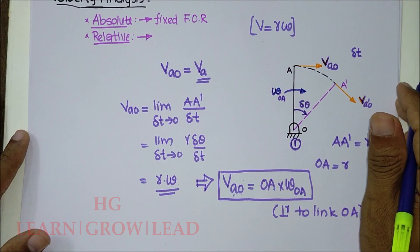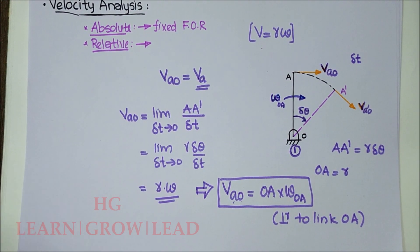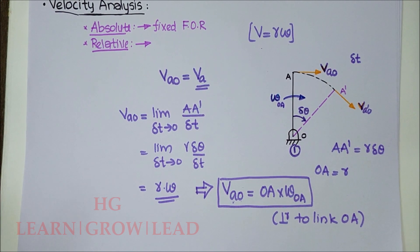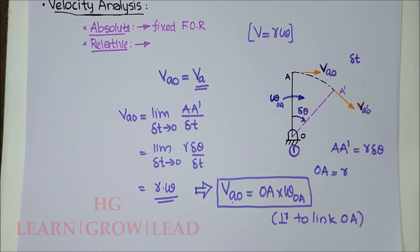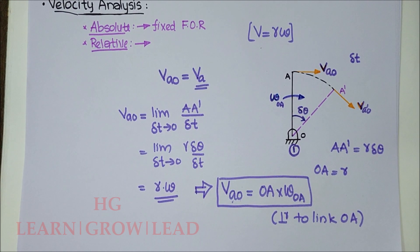This velocity is always perpendicular to the link OA. For relative velocity analysis we work with V = R·omega, where R is the distance from the reference point to the moving point, and omega is the angular velocity of that link. These are the two key quantities needed to solve the problem.